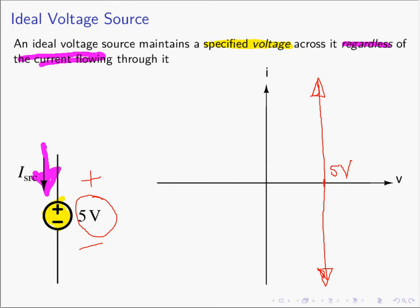We have 5 volts across this voltage source regardless of the current flowing through it. For example, if 2 amps is flowing through the 5-volt source, what's the voltage? It's 5 volts. What if someone changes that current to negative 100 amps? What is the voltage across the 5-volt source? It's going to be 5 volts. So no matter what current flows through the voltage source, we know the voltage across it — in this case, it's 5 volts.